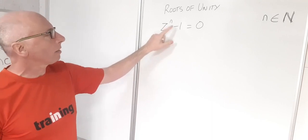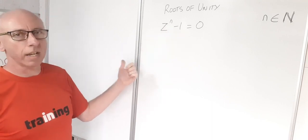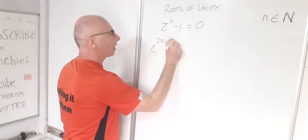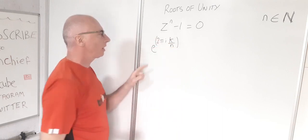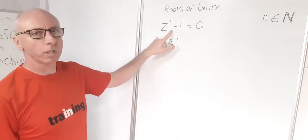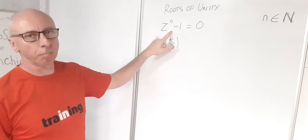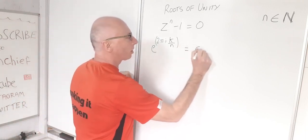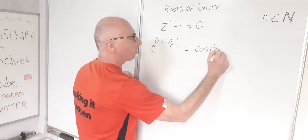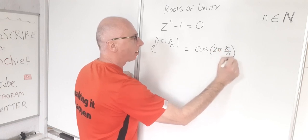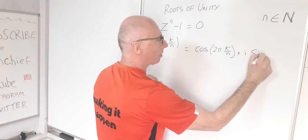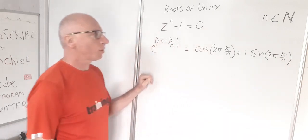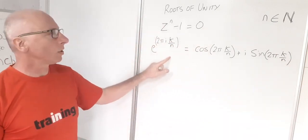For example, for z^n minus 1, our solutions in exponential form will be e to the 2πik over n — that is the index of the exponential that gives us our roots of unity. Another way we can write that is cosine(2πk/n) + i·sine(2πk/n), which also gives us our roots of unity.